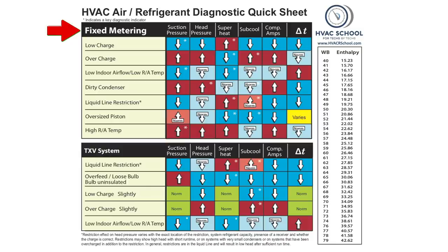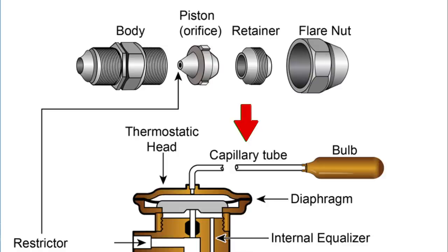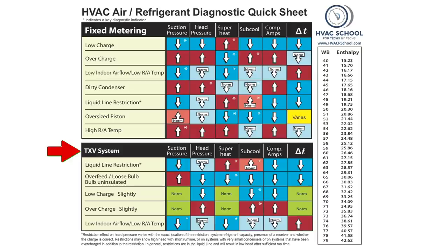If you take a look at this chart up top, we have a fixed metering device type of system, and then a TXV system below. We're focusing on low indoor airflow and low return air temperature. The chart up top is for a fixed metering device — a piston or capillary tube — and below are the symptoms you see for a TXV system.